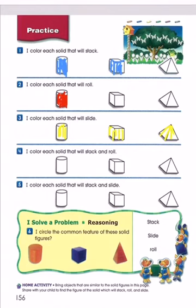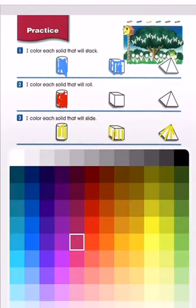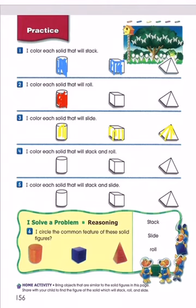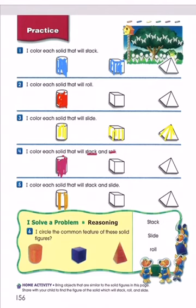Number four: which shape can stack and roll? Just the cylinder — the cylinder can stack and roll. Number five: which shape can stack and slide? The cylinder and the cube. So we color these two shapes.